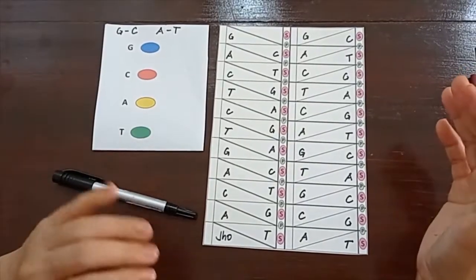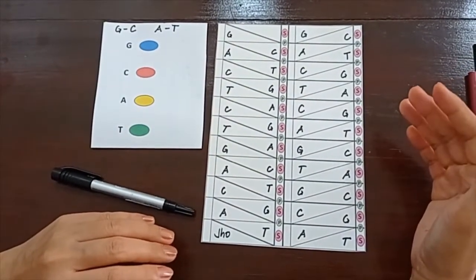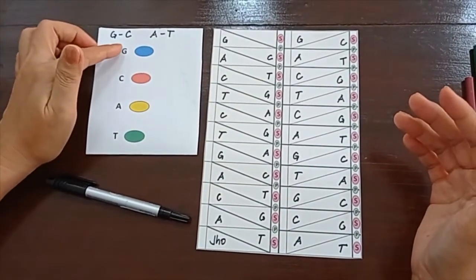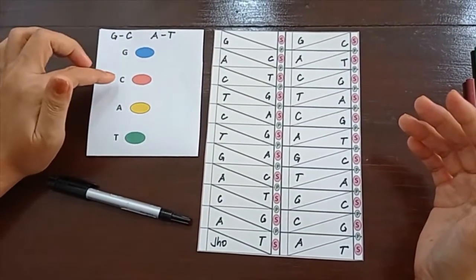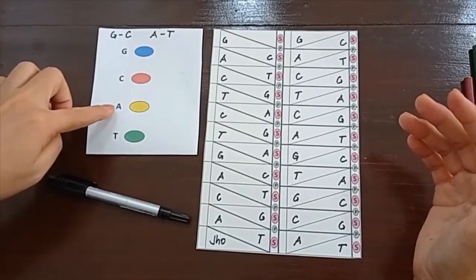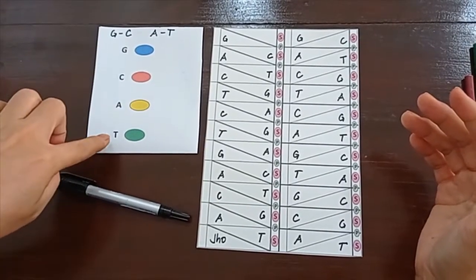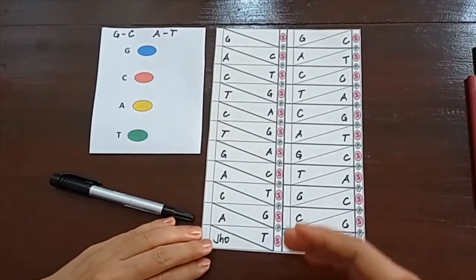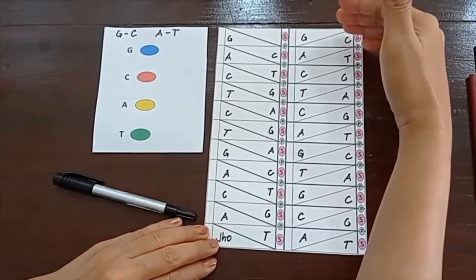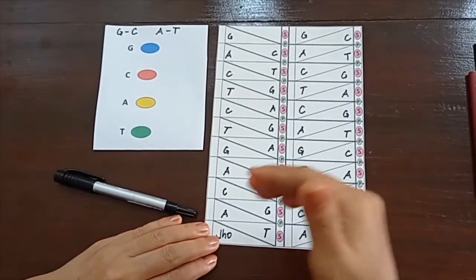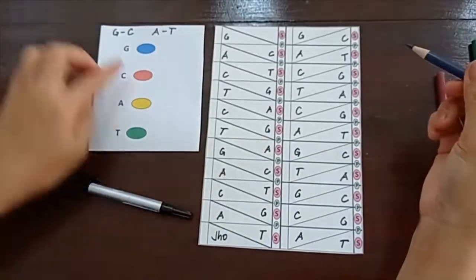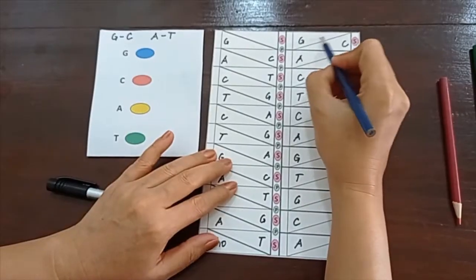I have in here my coding. I will color G blue, my C red, my A yellow, and T green. And make sure to be consistent all from up here, down here. For example, I have here my first G, so I will color that blue.